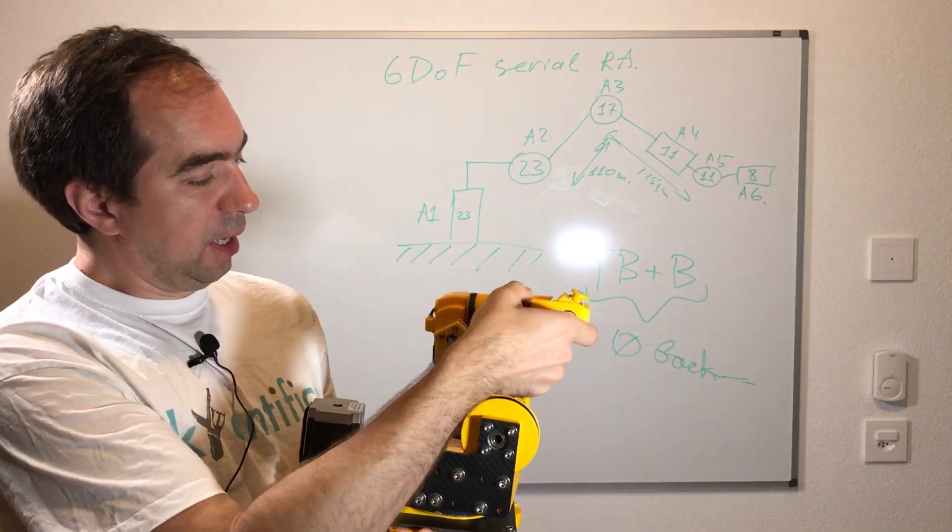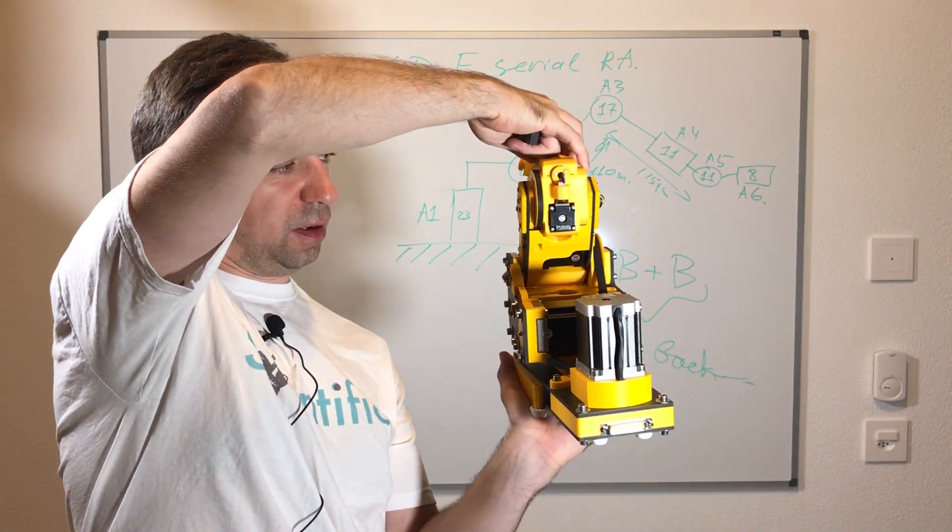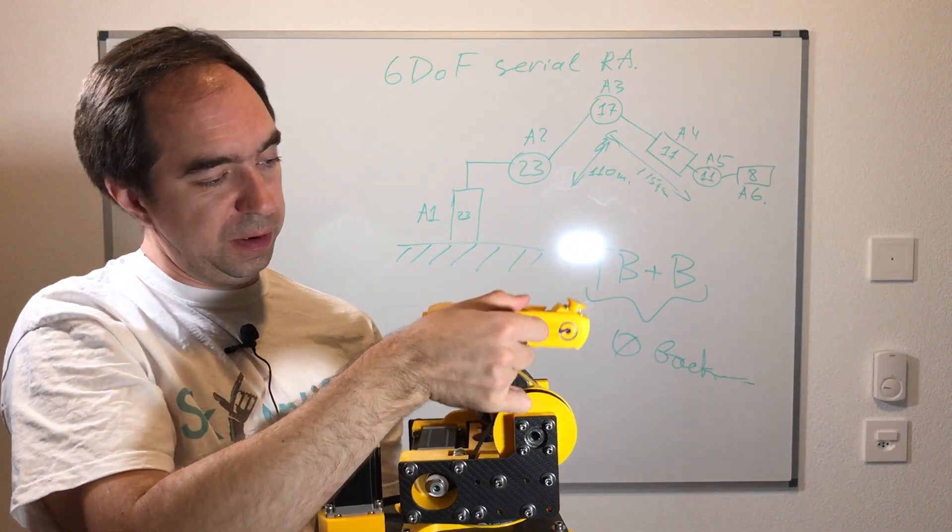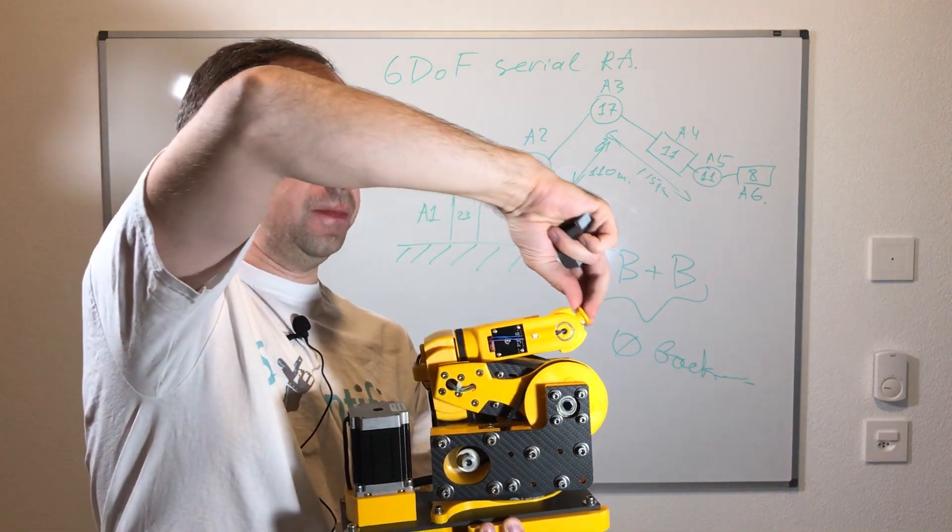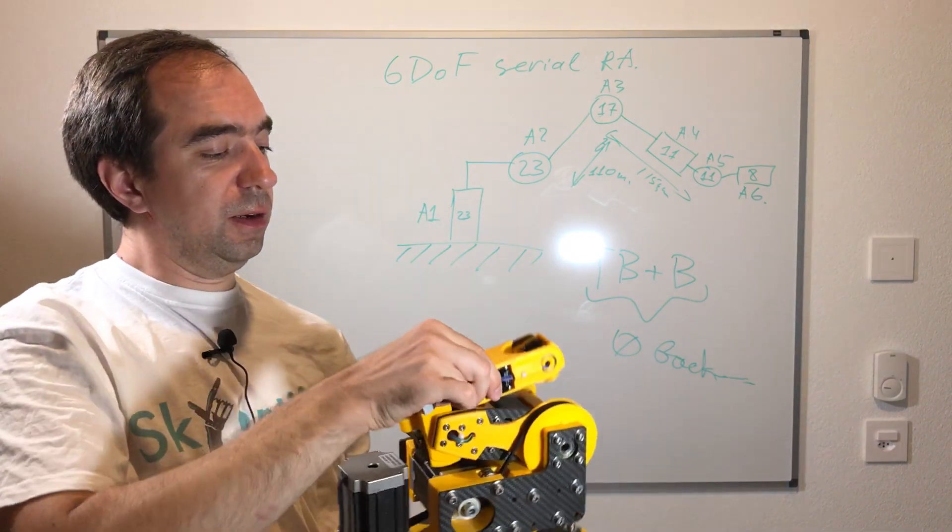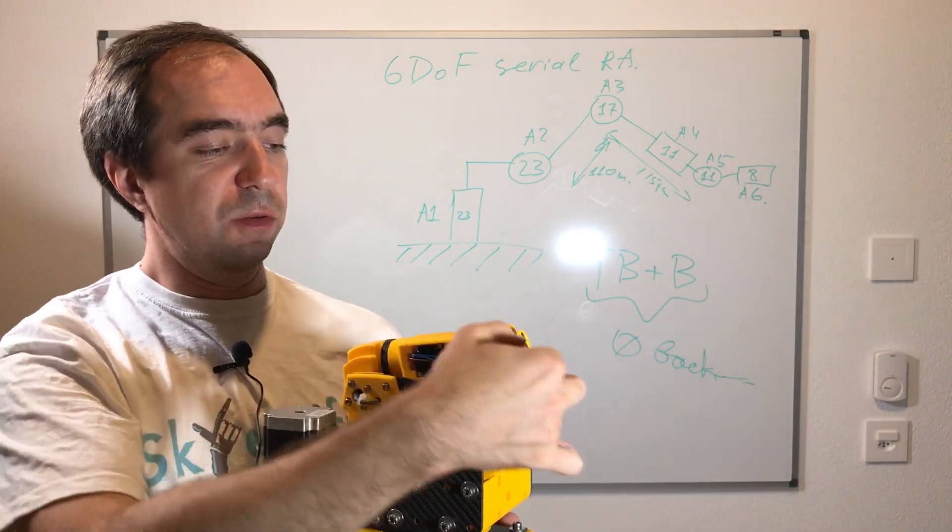This is axis 4 and the motor which drives it is on the back. This motor over here drives axis 5, and here there is a motor for the axis 6, which is this one.